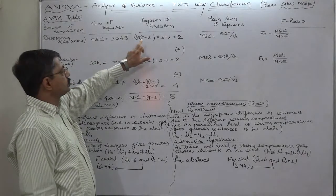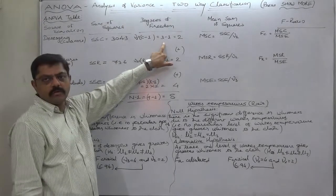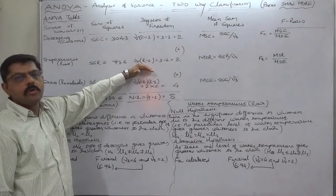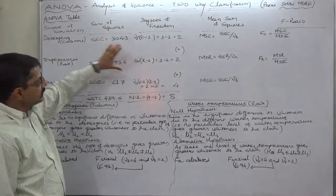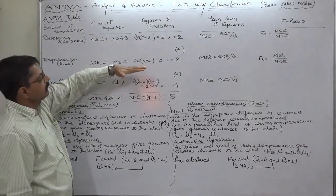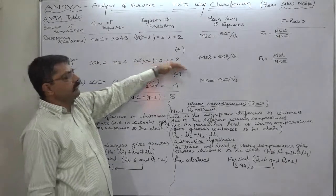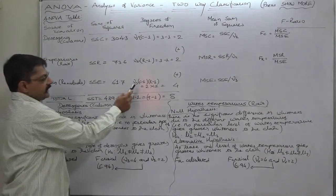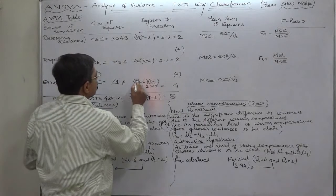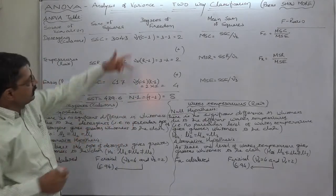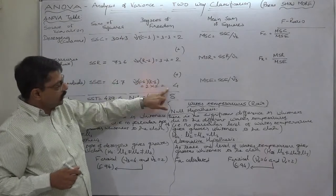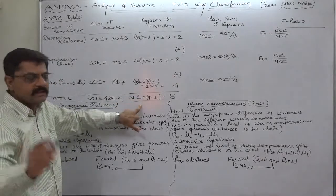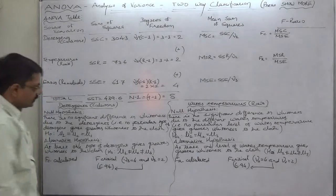The degrees of freedom for columns is number of columns minus one. We have three columns — detergents A, B, C — so it comes to three minus one equals two. Similarly, we have three water temperatures: cold, warm, and hot, so number of rows is three and degrees of freedom for rows is three minus one equals two. Degrees of freedom for error or residual is the product of these two: two times two equals four. The sum of all three degrees of freedom must equal total number of elements minus one, that is nine minus one equals eight.